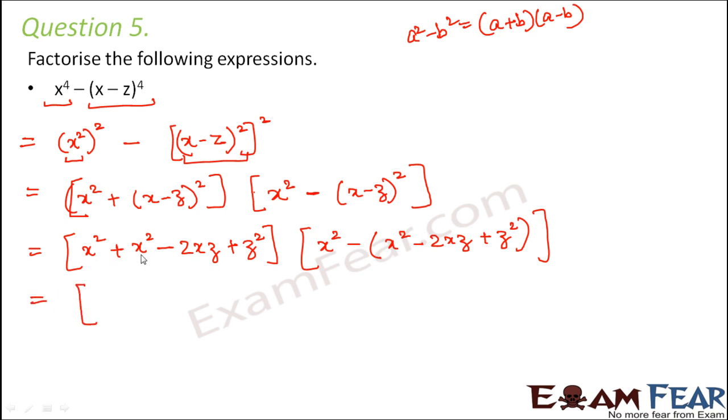Now here x square plus x square. This becomes 2x square minus 2xz plus z square. And what happens here? Here it becomes x square minus x square plus 2xz plus plus into minus is minus z square.